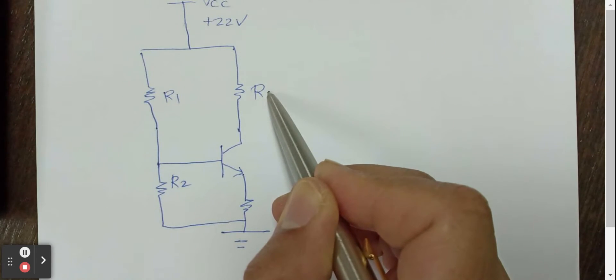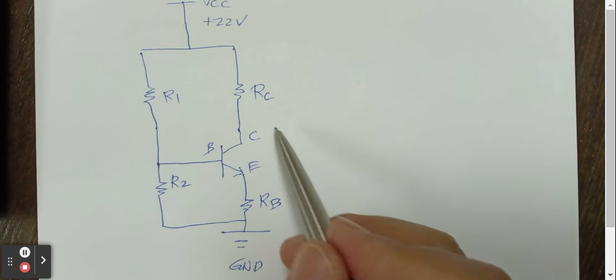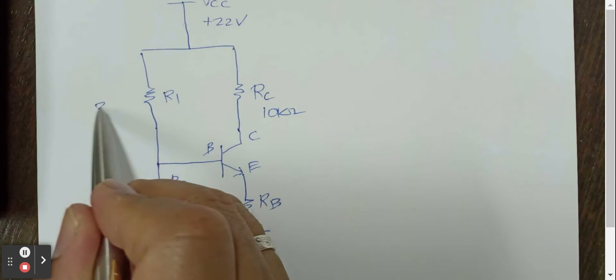So let's call this R1. We call this R2. This is RC. And this is RE. And of course, this is the ground. We have the collector, the base, and the emitter. Now let's say the RC is 10 kilo ohms. And the R1 is 39 kilo ohms. And we have R2 as 3.9 kilo ohms. And RE, I put RB here, this is RE, is equal to 1.5 kilo ohms.